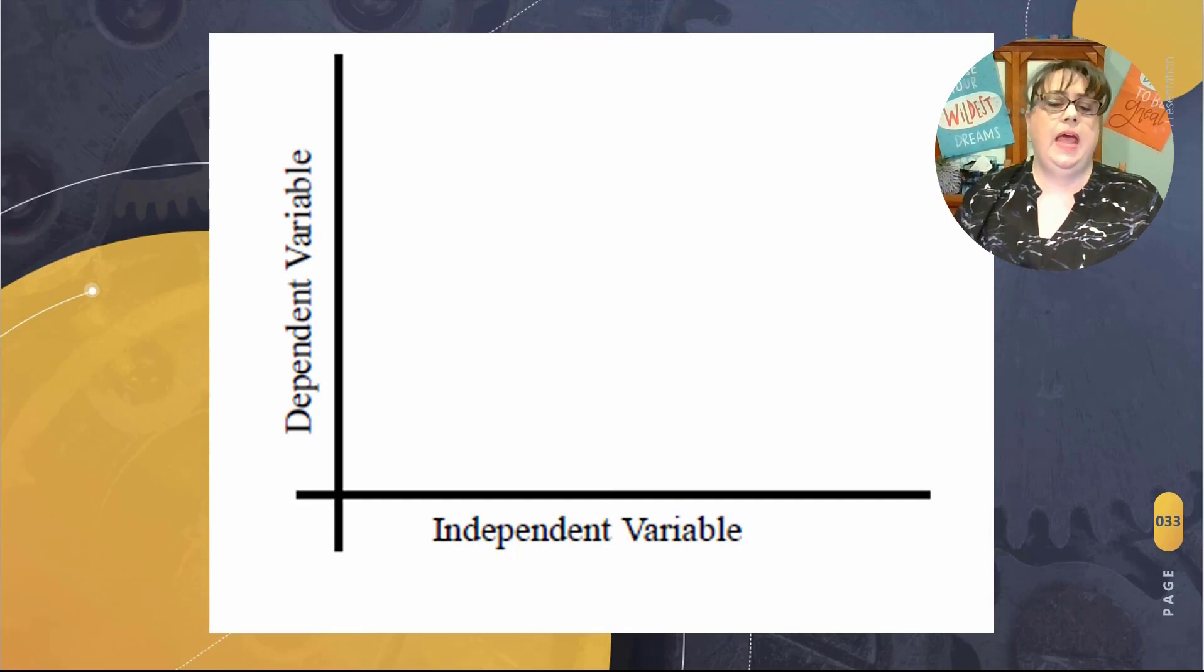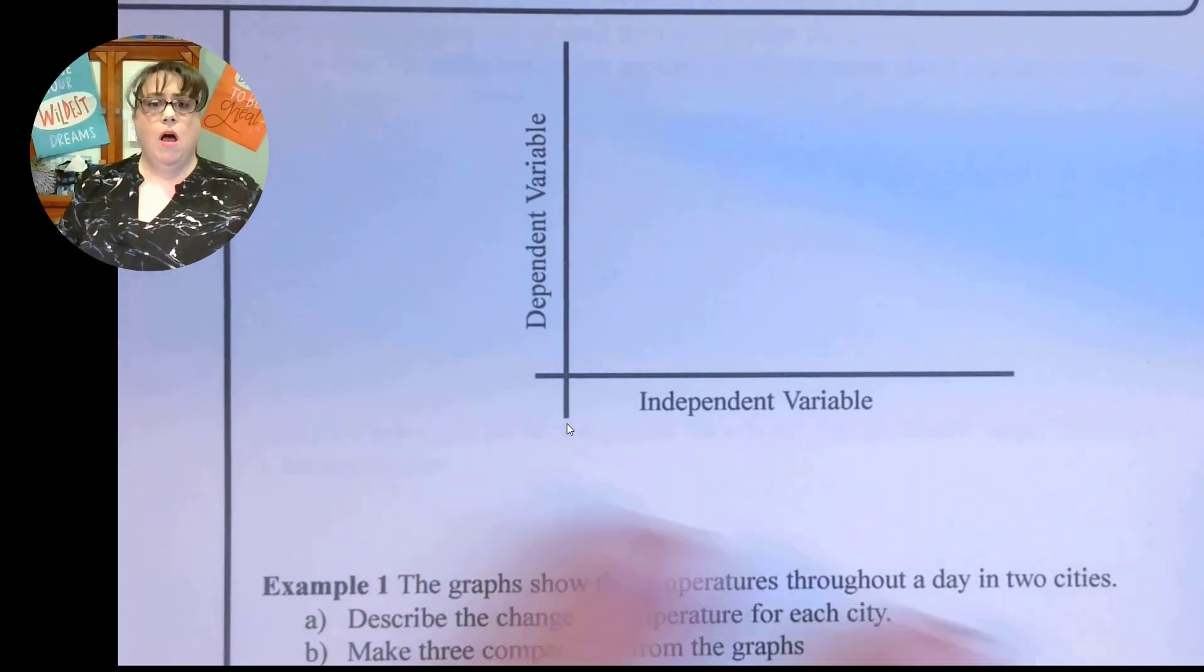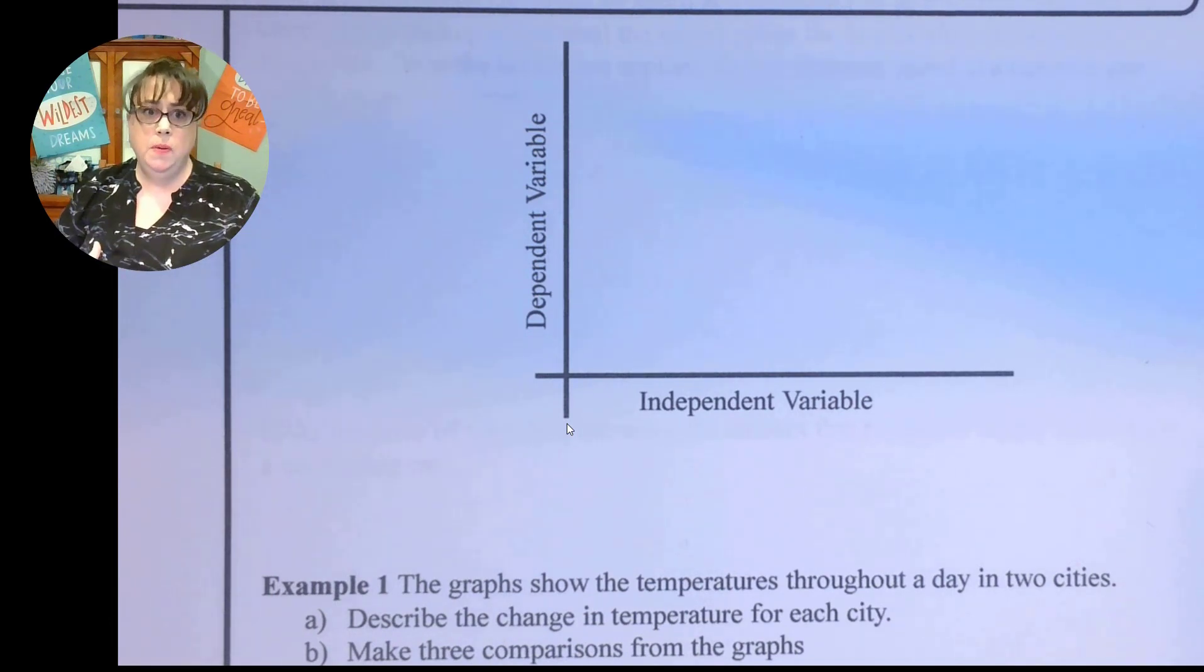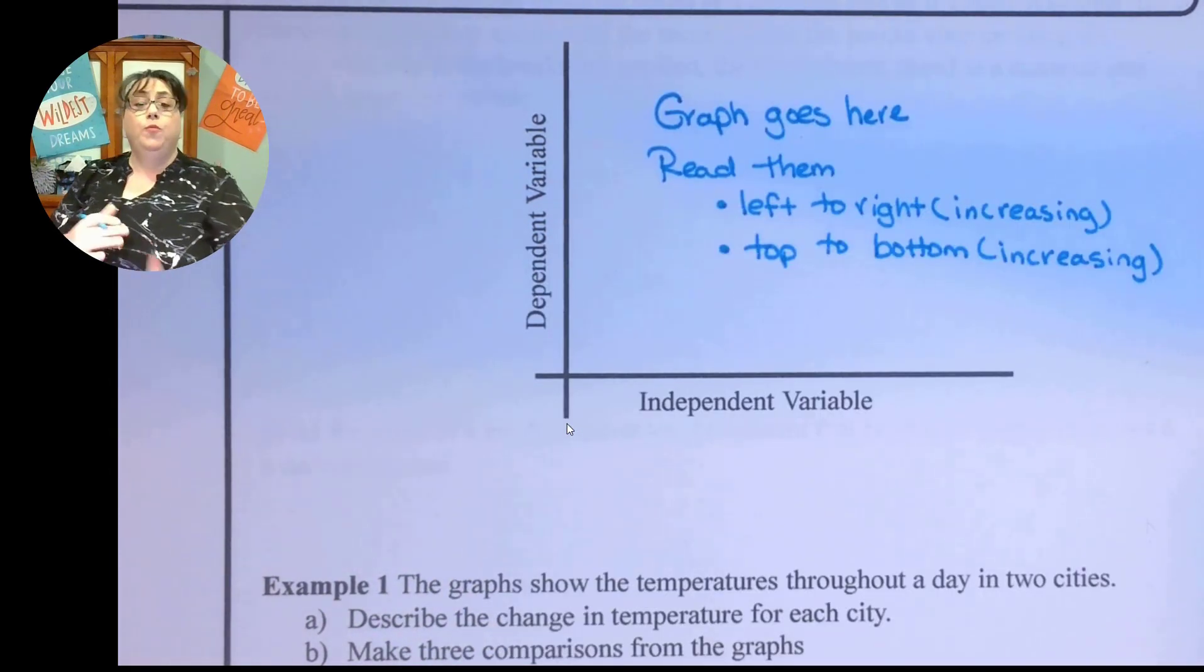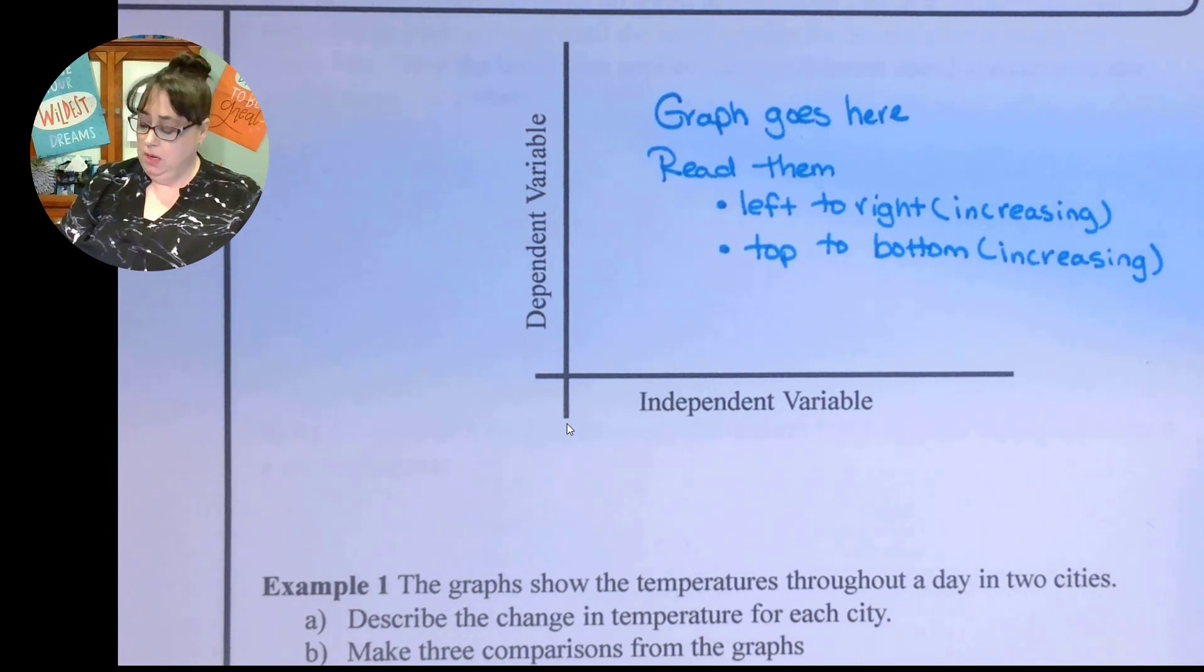Today we'll be looking at independent versus dependent variables. This is how all graphs start off, with this idea of your independent variable on the horizontal axis and your dependent variable on your vertical axis. In the center is where your graph goes. They're read from left to right increasing and top to bottom increasing.